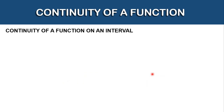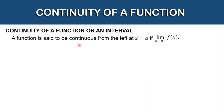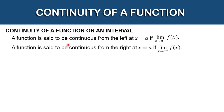Now let's talk about the continuity of a function on an interval. A function is said to be continuous from the left at x is equal to a if the limit of f of x as x approaches a from the left equals f of a. Similarly, a function is continuous from the right at x is equal to a if the limit of f of x as x approaches a from the right equals f of a.